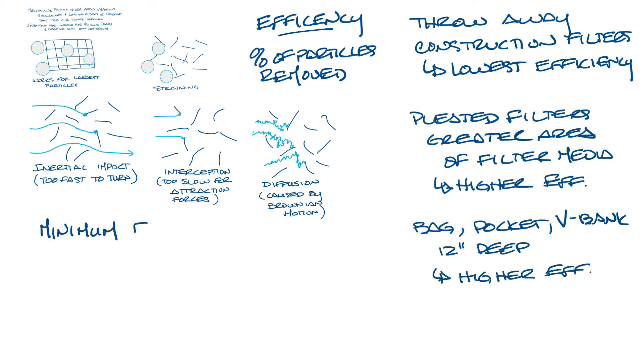You'll see filters rated with a minimum efficiency reporting value or its MERV value. So you'll see MERV 8, MERV 13, and so on to MERV 16. For the filter types we just discussed, the throwaway filters are typically a MERV 5 or lower. Pleated filters are around MERV 6 through 11. And the V-bank type are usually MERV 11 through 15. I'll do a separate video on MERV and particle size and go into a lot more detail about this later.